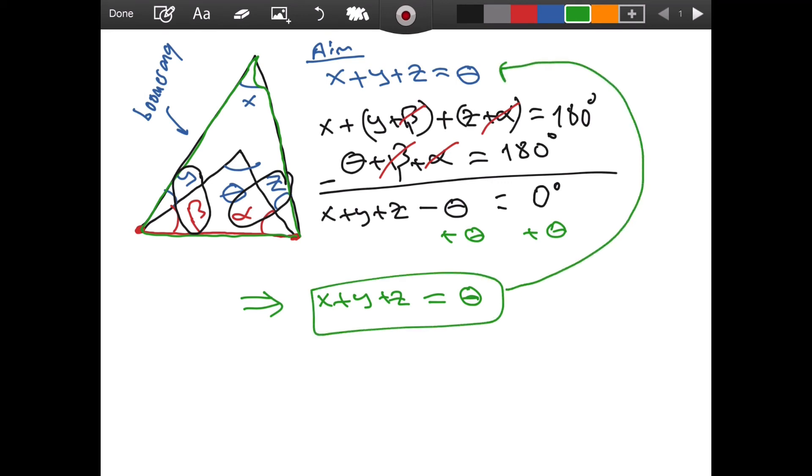So we have proven that x plus y plus z is equal to theta in this geometry. If we have a thing that looks like a boomerang, right, if we have this, well then you know that the interior angles—the sum of the interior angles—will give you this angle.